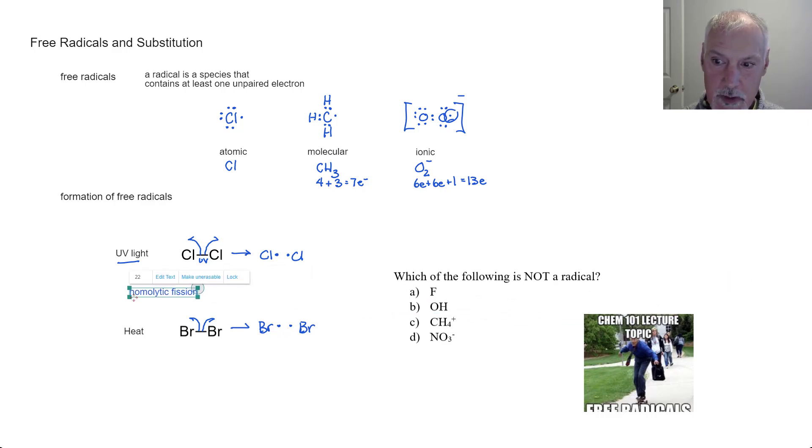This splitting of the bond and sending the electrons one way and one the other way is called homolytic fission. Homo stands for same. Lytic is breaking. So we essentially have the same breaking. The atoms get equal amounts of electrons.